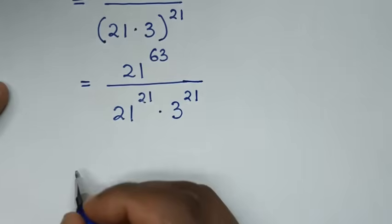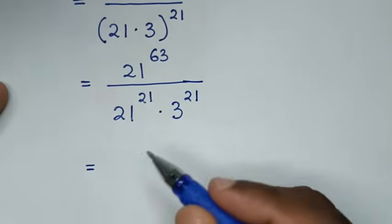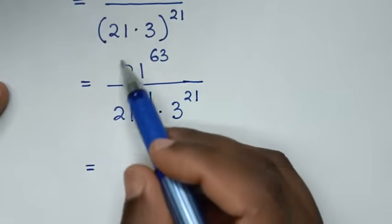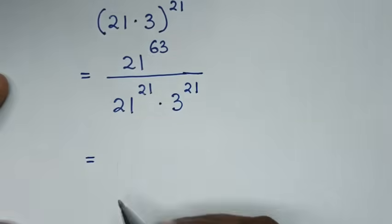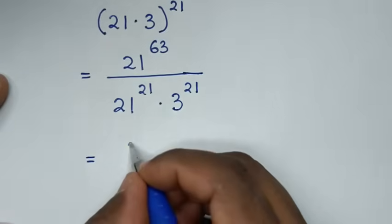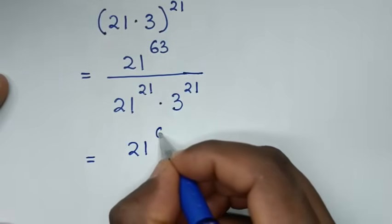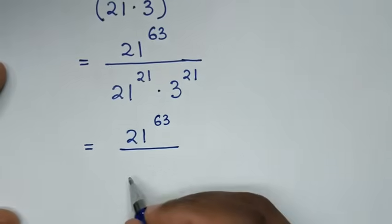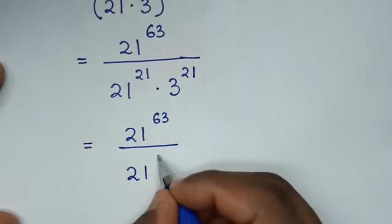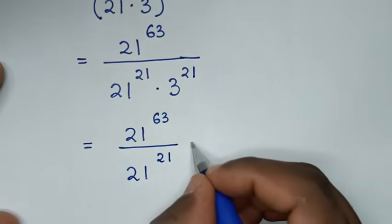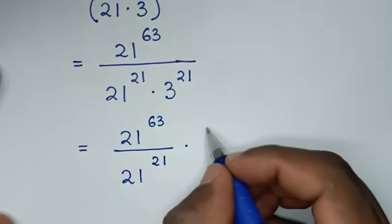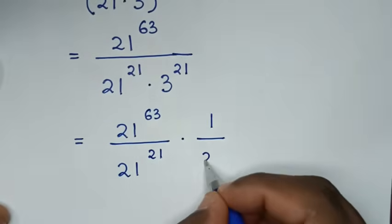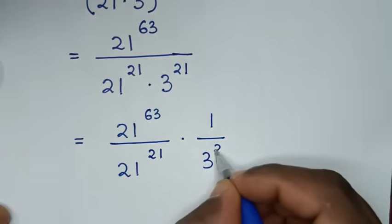Then in the next step, it will be equal to: we'll divide exponents with the same base of 21, so it will be 21 power of 63 over 21 power of 21, then times 1 over 3 power of 21.